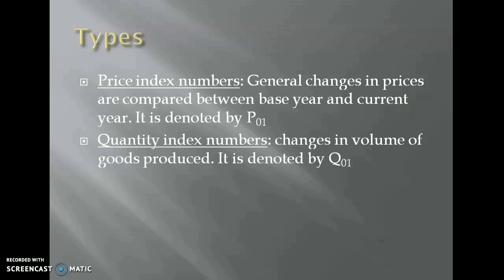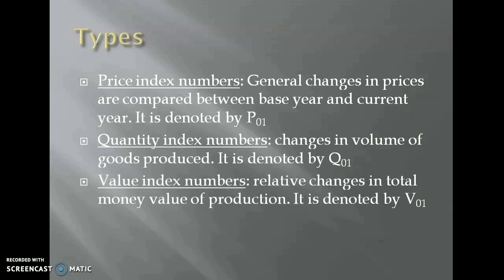The second type is quantity index numbers. This quantity index number studies the relative changes in the volume of goods produced or consumed or distributed. This is denoted by Q01. The next one is value index numbers. Value index numbers study the relative changes in the total money value of production or transaction, and it is denoted by V01.